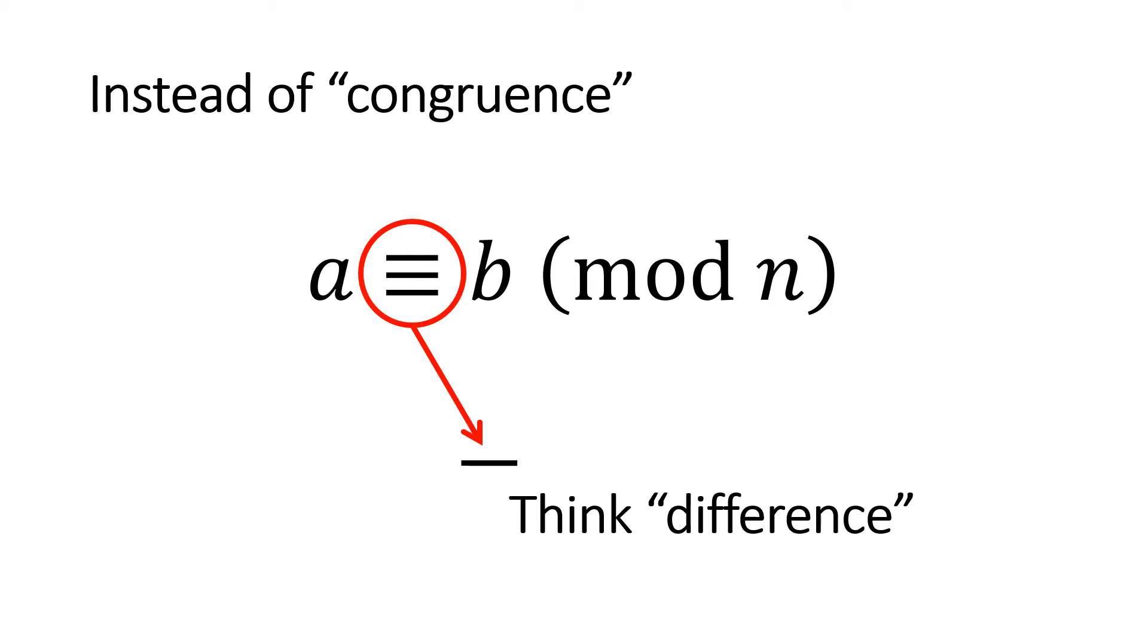The key thing is the value of n has to divide a and b with the same remainder, and that's what makes a and b congruent. So the shortcut I'm telling you about is simply to replace the congruence symbol with a minus.